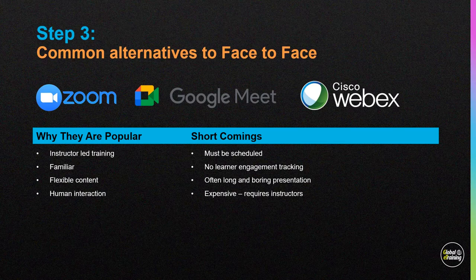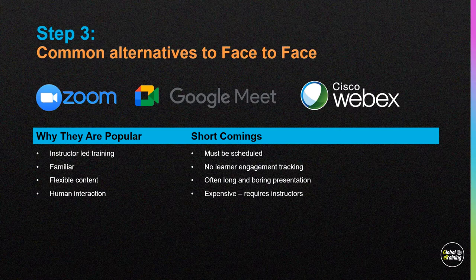Step three: the common alternatives to face-to-face training. First, virtual classrooms — Zoom, Google Meetings, Cisco WebEx, GoToMeetings. They're popular for very good reasons: they replicate instructor-led training quite well, you get human interaction, you can ask questions, and the instructor can be flexible and answer questions on the fly. But they do have shortcomings: they have to be scheduled, you had to show up to this webinar at this exact time, they require leaving your workforce as a group, and there's no learner engagement tracking — I don't know who's paying attention and who's checking email.